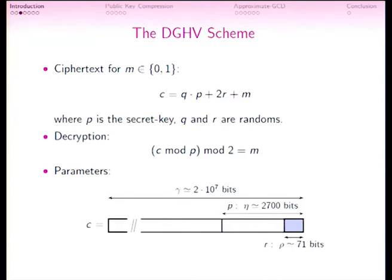For the parameters of the scheme, we must take a very large ciphertext of roughly 20 million bits to avoid lattice attacks. The prime P — the secret key — has a reasonable size of only 2,700 bits. To generate this huge ciphertext, we take a very large Q, and the noise added has a much smaller size of only 71 bits. So to encrypt a single bit, we need a ciphertext of 20 million bits.